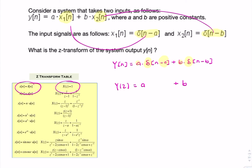Because we also have these delays, remember: when you have a delay, that corresponds to multiplication by z to the power of minus that delay. So we have z to the power minus a, and z to the power minus b, to represent the z-transform of that delay. This is the time shift property of the z-transform. So there we have it — that's the final answer, that's Y(z), the z-transform of y(n).